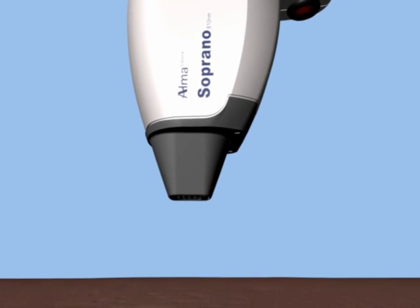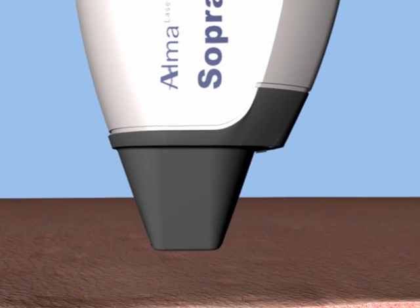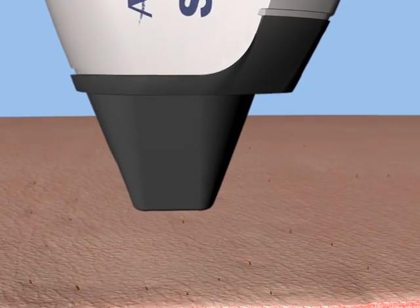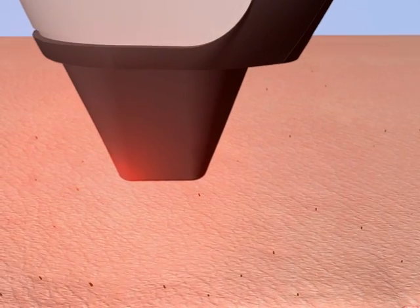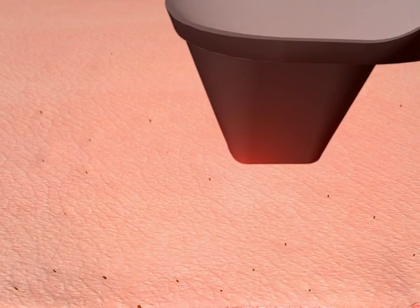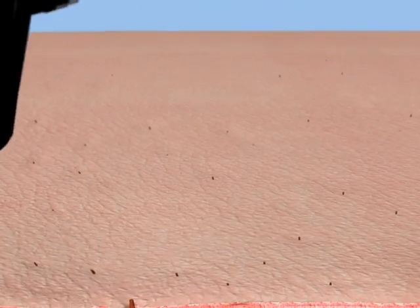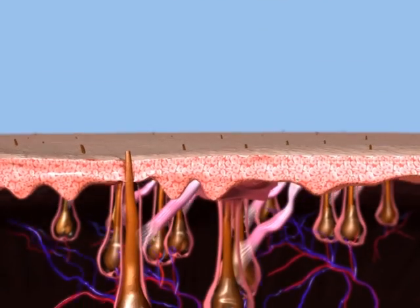The Soprano XL's revolutionary SHR mode provides an ideal combination for efficient hair removal. The SHR mode uses the optimal hair removal wavelength of 810 nanometer diode for deep penetration into the dermis where the hair follicle is located.